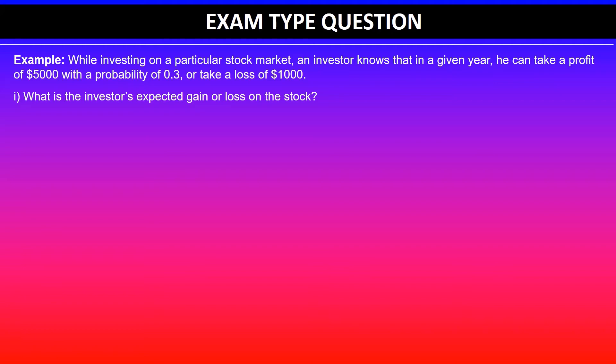The first part of the problem asks what is the investor's expected gain or loss on the stock. The second part asks what are the variance and standard deviation of the investor's gain on the stock.